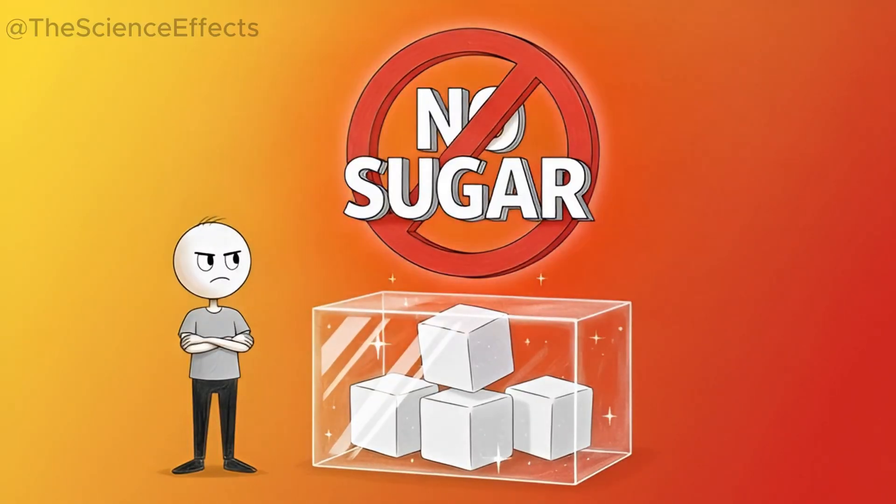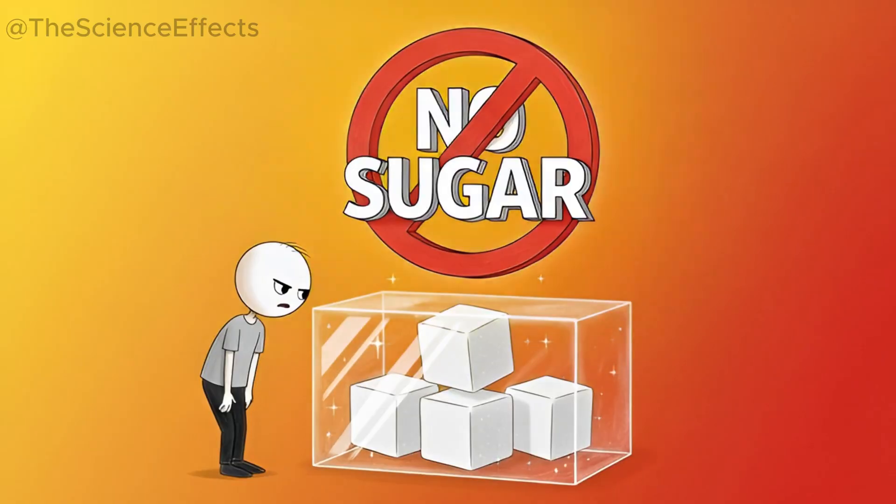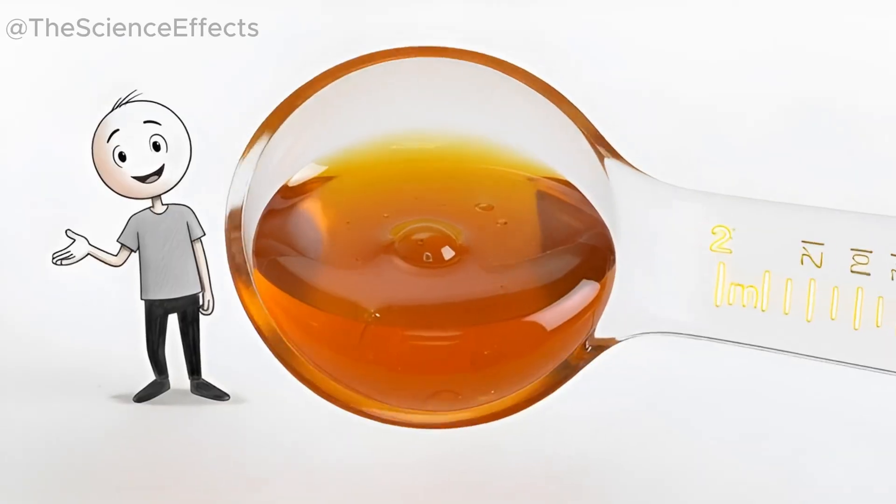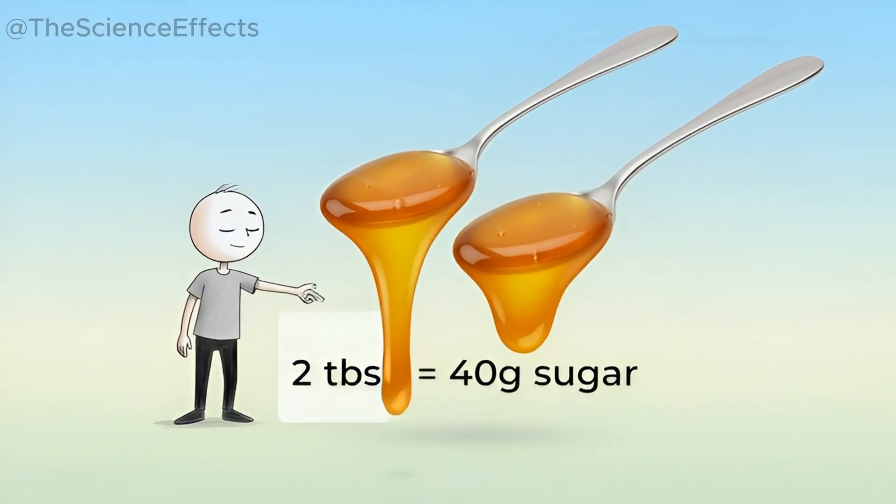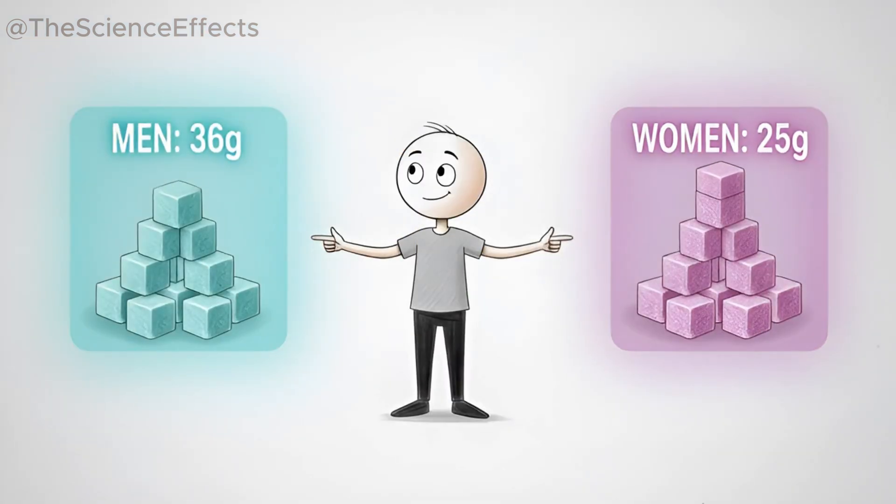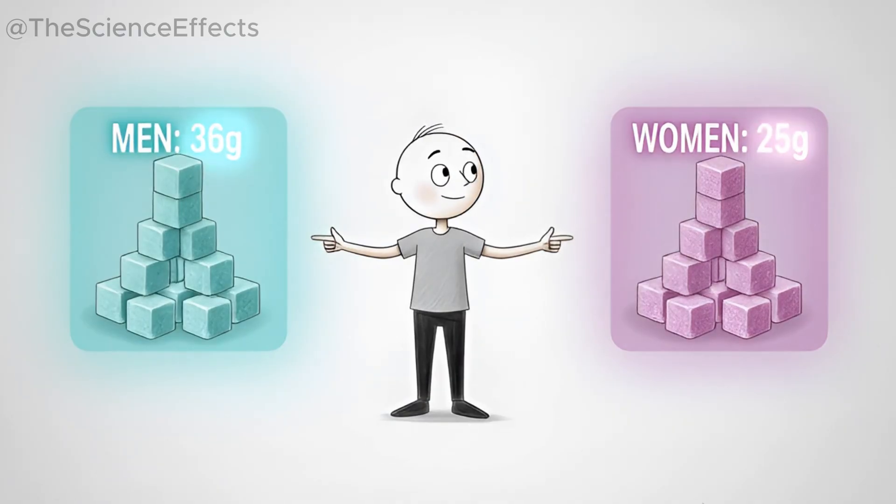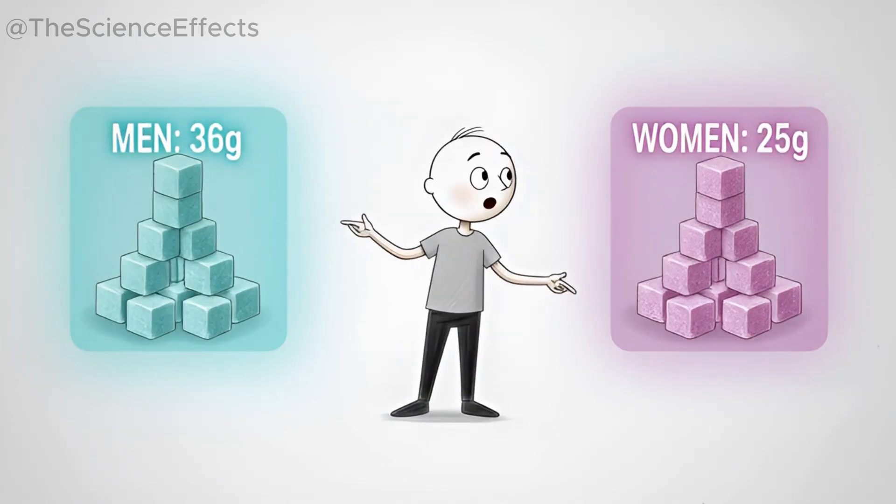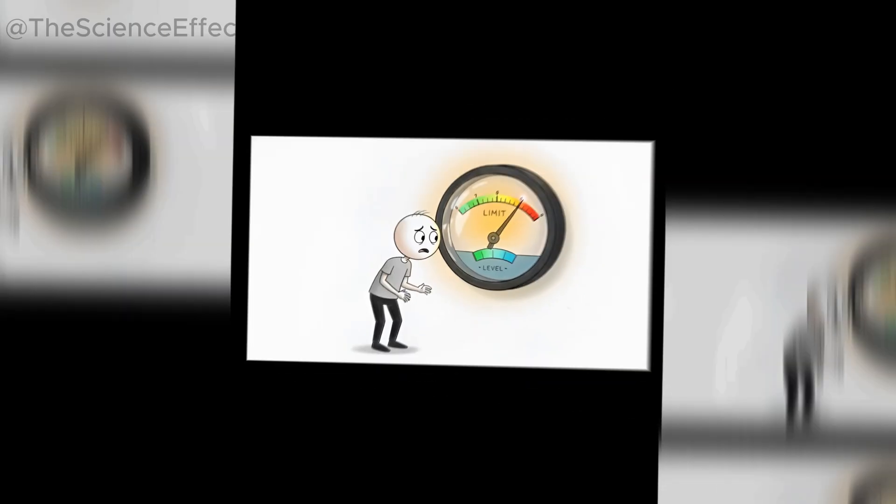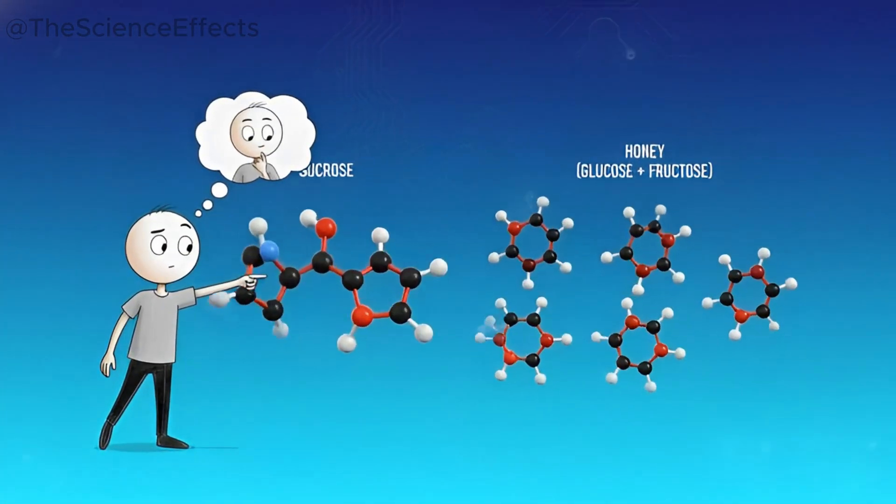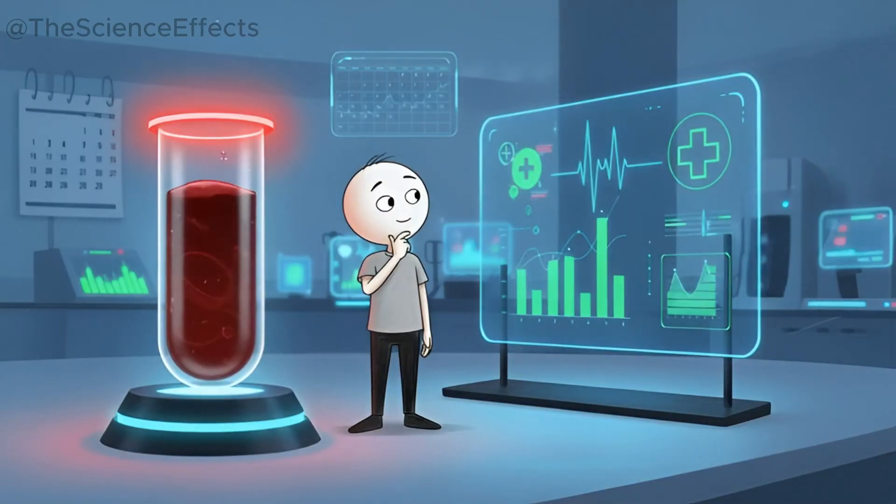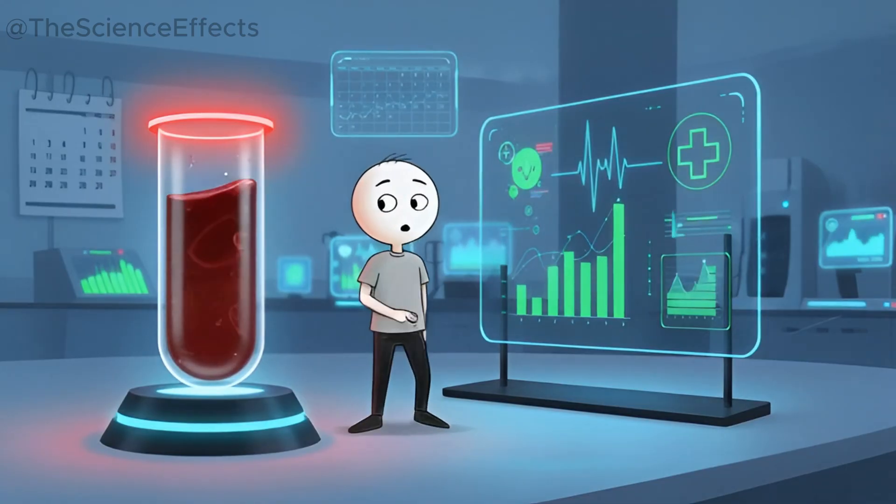The plan was simple. For one month, no obvious added sugars. No candy, no soda, none of it. Instead, I'd have a fixed amount of honey every day. I landed on two tablespoons, which is around 40 grams of sugar. To give you some perspective, the American Heart Association suggests men stay under 36 grams of added sugar a day and women under 25 grams. So, I was intentionally pushing that upper limit. I wanted to see if the type of sugar really makes a difference. I tracked my weight, my energy, how I felt, and at the end of the 30 days, I got my blood tested to see the real story.